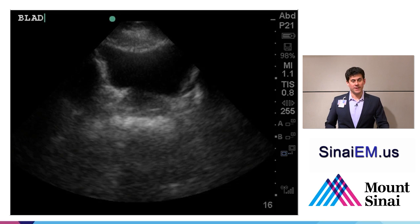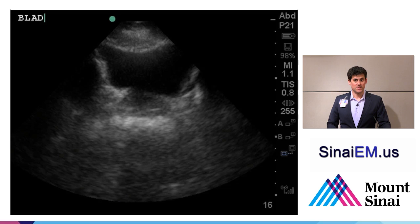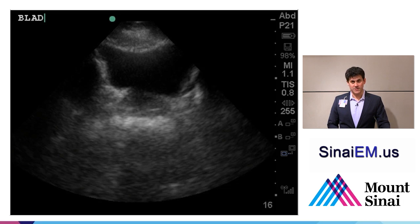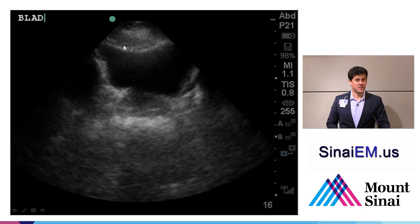We want to image both kidneys in longitudinal and transverse views, and then image the bladder as well. The bladder is important to image in the setting of oliguria, anuria, or potential urinary retention — to see if the bladder is empty or full. If you've placed a Foley catheter and it's not draining, you want to confirm if it's actually within the bladder. Also, if you see hydronephrosis, you want to assess whether it's functional obstruction caused by a very full bladder.